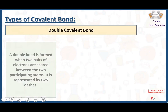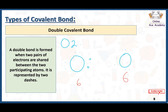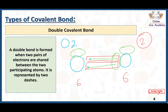The second type is the double covalent bond. A double bond is formed when two pairs of electrons are shared between the two participating atoms, and it is represented by two dashes. For example, oxygen — O₂ — has six electrons in its outermost shell. Both oxygen atoms need two more electrons each to complete their octets. Oxygen shares one pair of electrons, then shares another pair, making two pairs total. This gives each oxygen atom eight electrons in its outermost shell — a complete octet — and they are both stable. Because they share two pairs of electrons, they have two bonds between them.